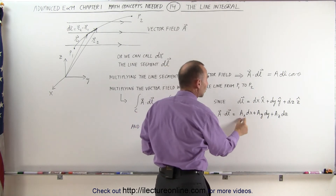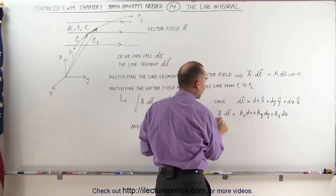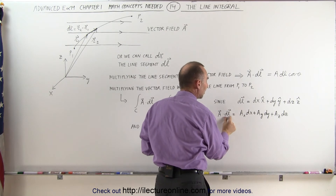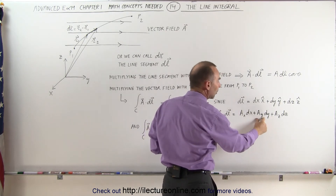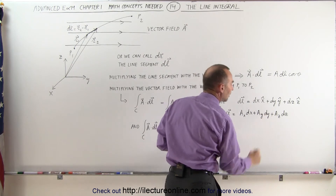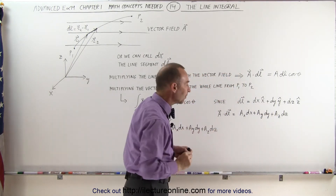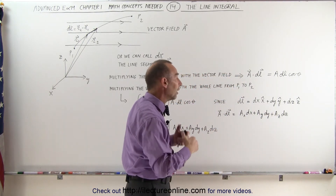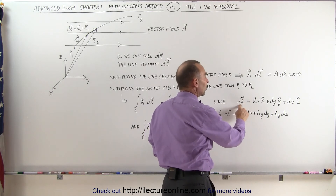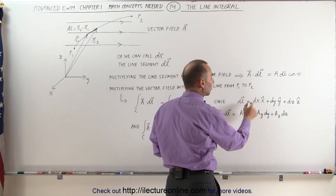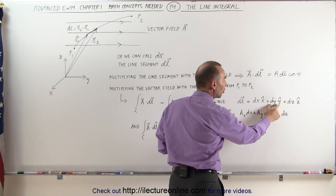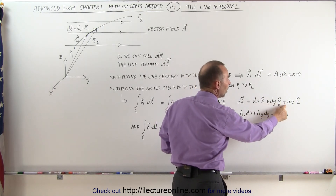Then we multiply the y component of the vector field by the dy portion of the line segment, and so forth. Any line segment in three-dimensional space can simply be expressed as a small change in the x direction plus a small change in the y direction plus a small change in the z direction.